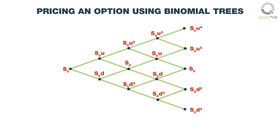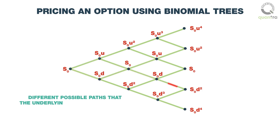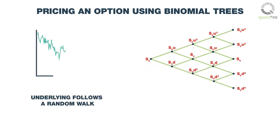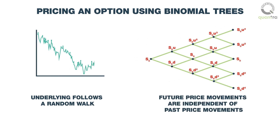A binomial tree is a diagram that flows from one starting node into two nodes and continues the same for n layers. The binomial tree represents different possible paths that the underlying might follow in the lifespan of the option. An assumption here is that the underlying follows a random walk, that is, future price movements are independent of past price movements.